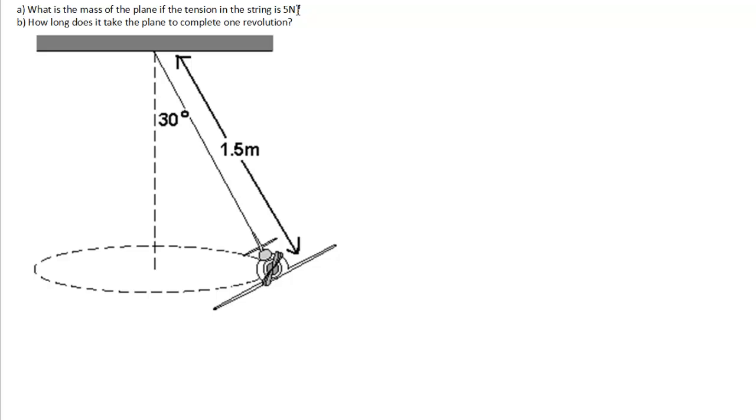Now the additional information they provide is the tension in the string itself is 5 newtons. And what we want to start with is trying to figure out what the mass of the airplane is if we know the tension is 5 newtons.